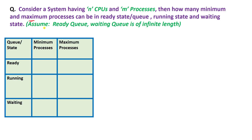There is an assumption that the ready queue and waiting queue are of infinite length. Basically, this is a table where we have to make entries — what is the minimum number of processes which can be present inside the ready queue, the maximum number, and the same for the running and waiting states. Let's see how we can solve this question.